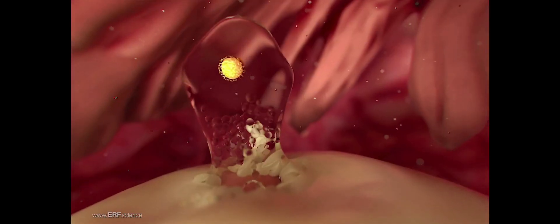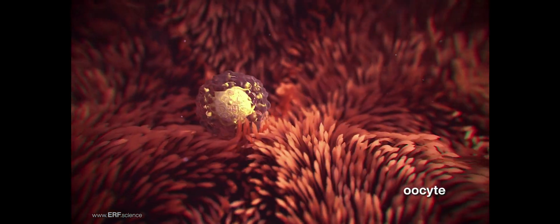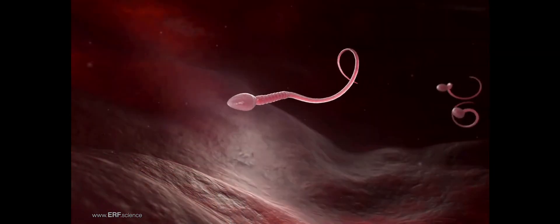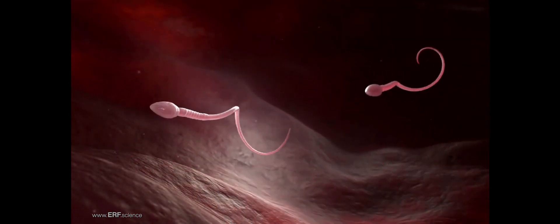A woman's reproductive cell is commonly called an egg, but the correct term is oocyte. Likewise, a man's reproductive cell is widely known as a sperm, but the preferred term is spermatozoan.